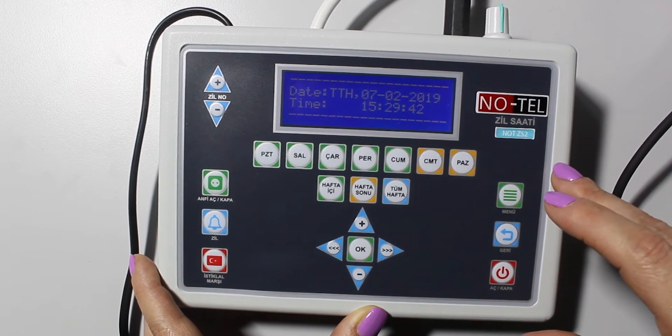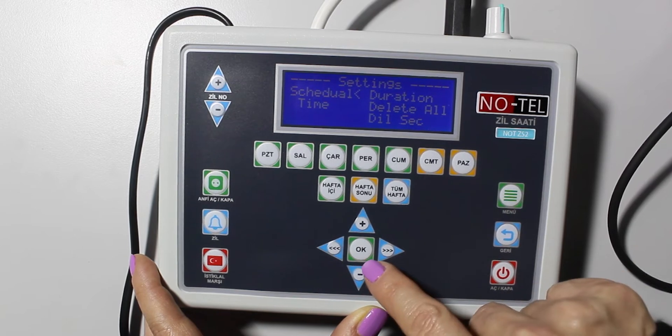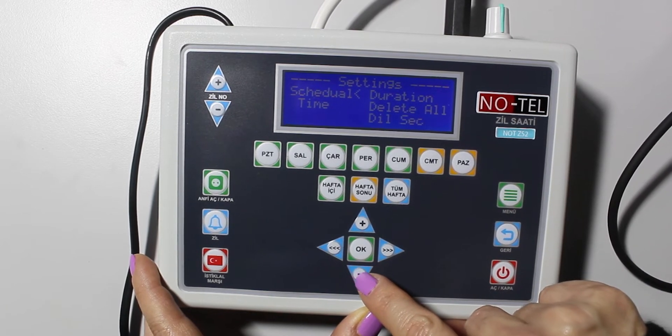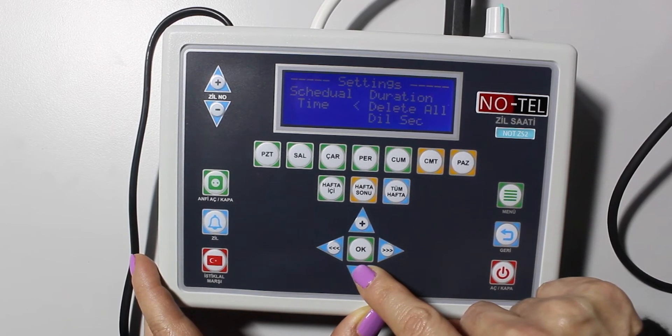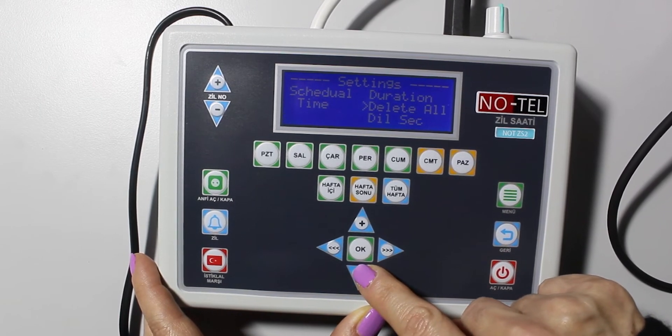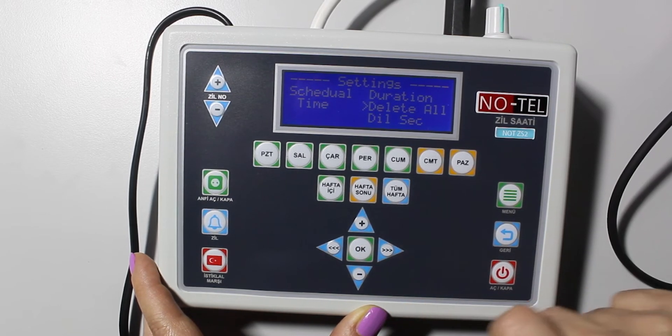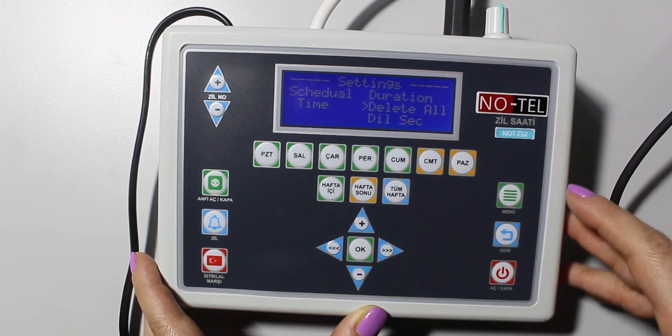Press the menu button and select delete all. Press OK and clean all the alerts. Now you can program the device.